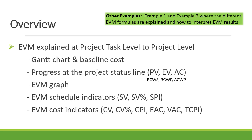That is your schedule variance, schedule variance percentage, and schedule performance index. We will also be calculating the cost indicators: cost variance, cost variance percentage, cost performance index, your estimate at completion, the variance at completion, and our to-complete performance index.